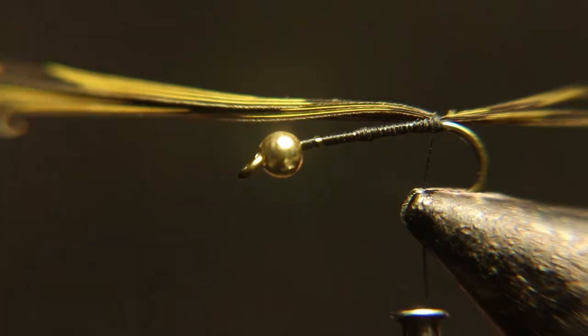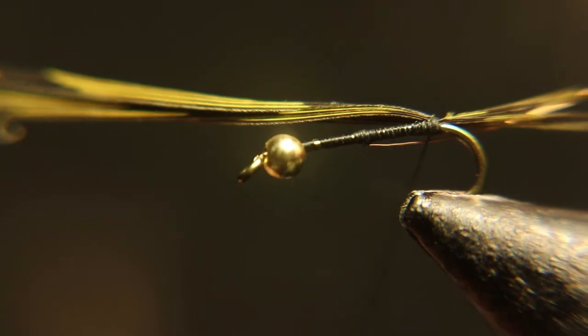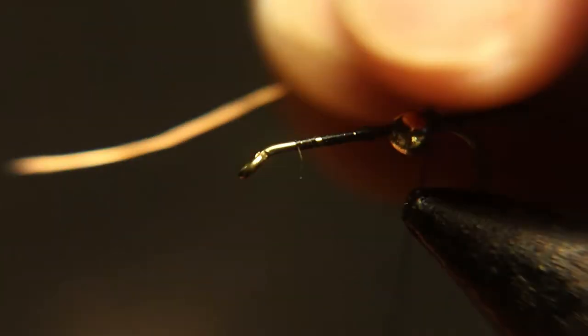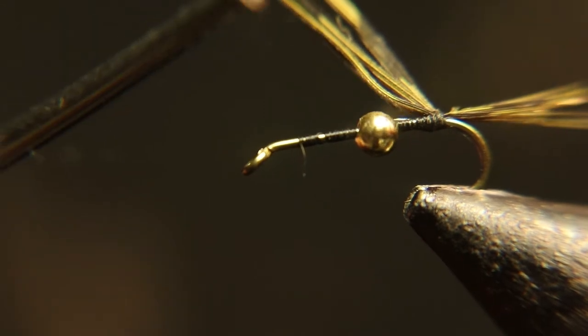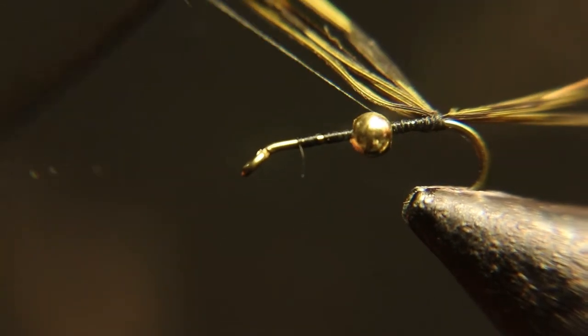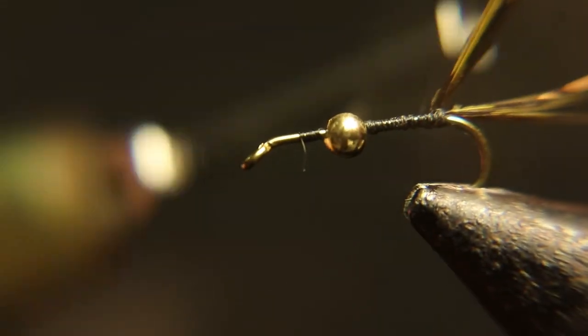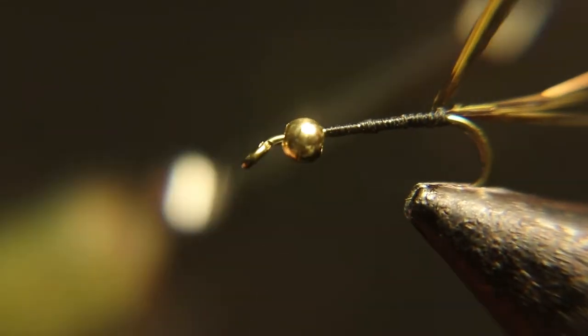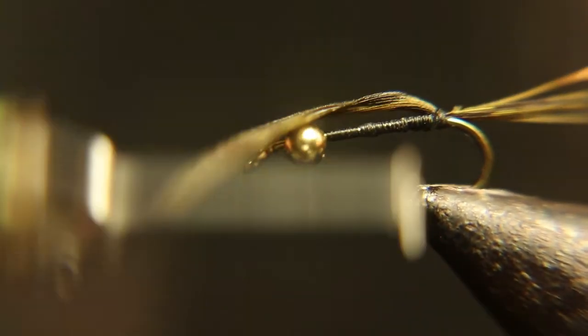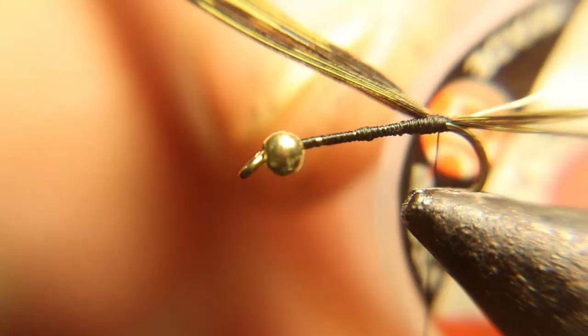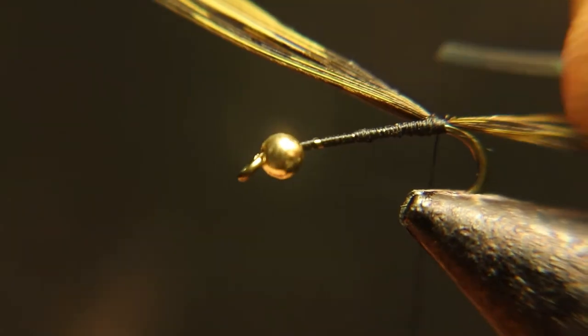Now we got some full fine gold wire. We're going to tie that in; that'll be a rib. Now we have medium flat pearl tinsel, and we're going to tie that in.